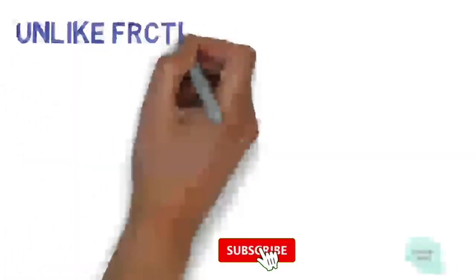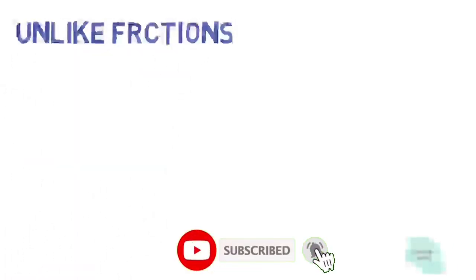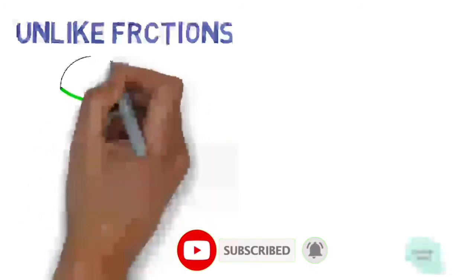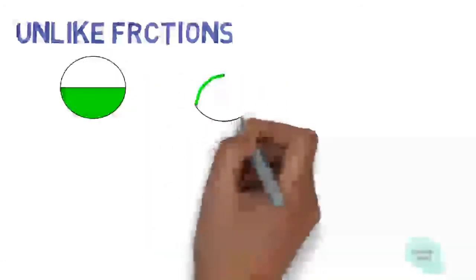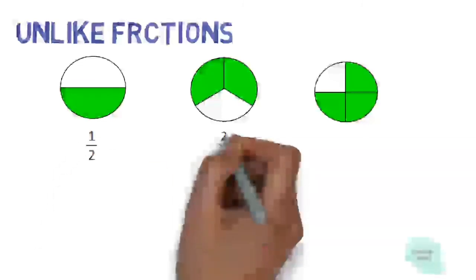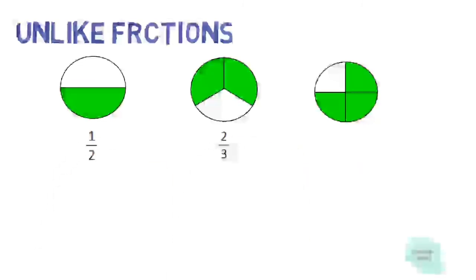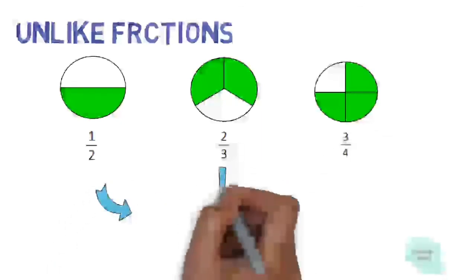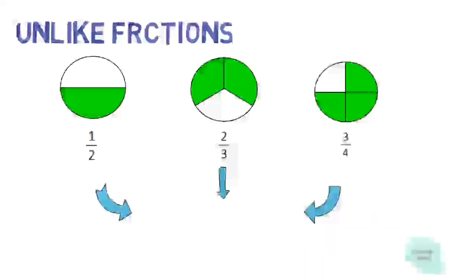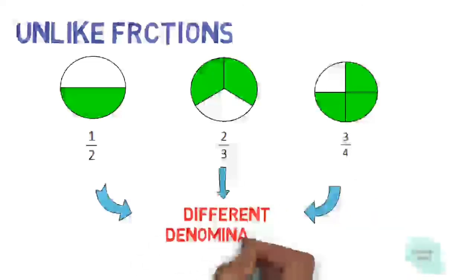Last one, let's discuss unlike fractions. There are three circles divided by two, three, and four equal parts. The first fraction is one half, the second is two thirds, and the third one is three fourths. Look, all three fractions have a different denominator. When all fractions have a different denominator, we call that unlike fractions.